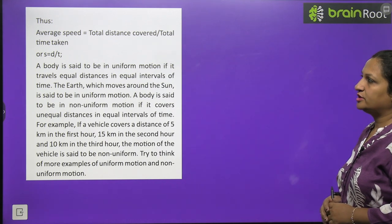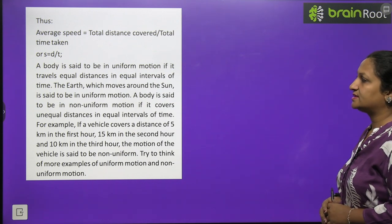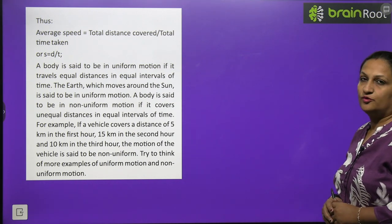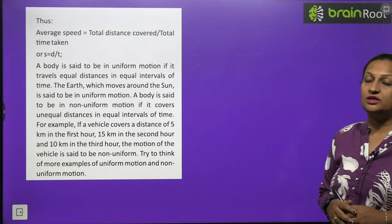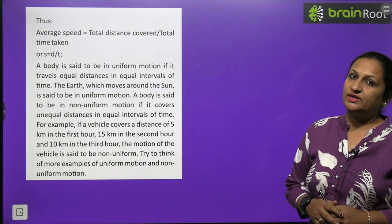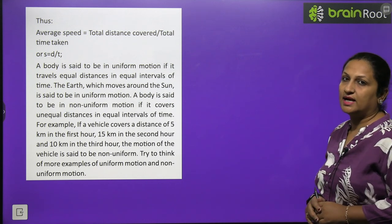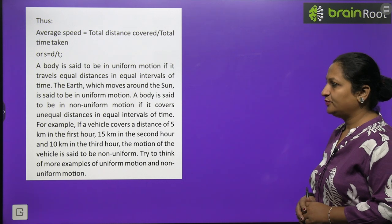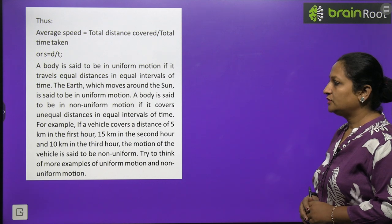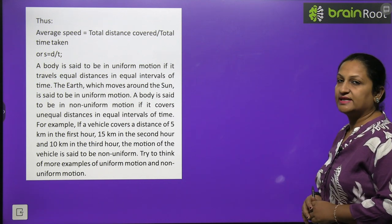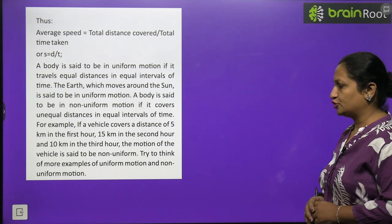Average speed equals total distance covered divided by total time taken, so S = D/T. A body is said to be in uniform motion if it travels equal distances in equal intervals of time — for example, the Earth moving around the Sun shows uniform motion, as the Earth covers equal distances in equal intervals of time. A body is said to be in non-uniform motion if it covers unequal distances in equal intervals of time — for example, if a vehicle covers 5 km in the 1st hour, 15 km in the 2nd hour, and 10 km in the 3rd hour, its motion is non-uniform.